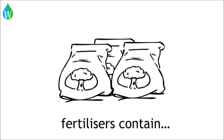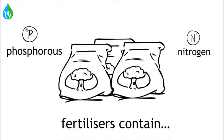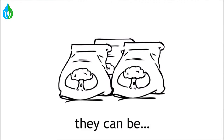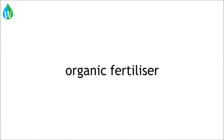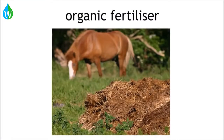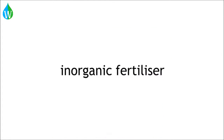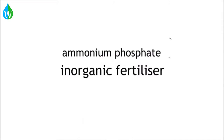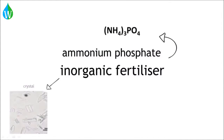Most fertilizers contain nitrogen and phosphorus, though some contain other useful elements like potassium. They can be organic or inorganic. Organic fertilizer contains carbon, and an example of an organic fertilizer is manure. Inorganic fertilizers can take many forms, such as ammonium phosphate, which can be in a crystal or a powdered form.